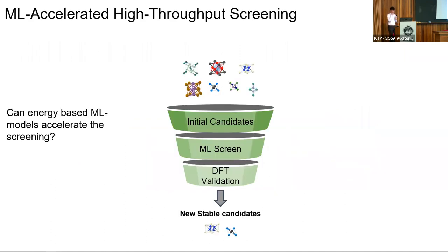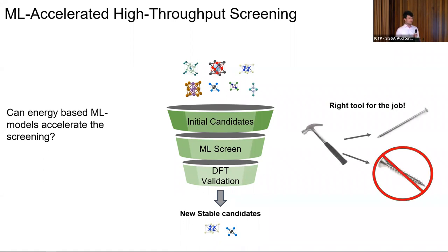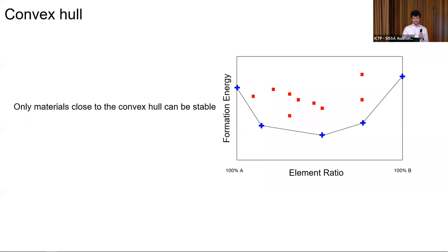What I'm going to talk about instead is using energy-based machine learning models for accelerating the screening. If you use a machine learning model trained to predict formation energies for crystal structures, the question is what kind of machine learning model would you need for this kind of task. You need to have the right tool for the job.